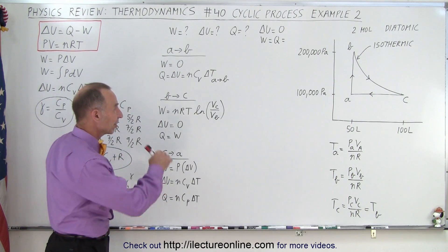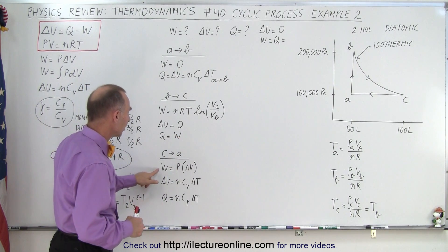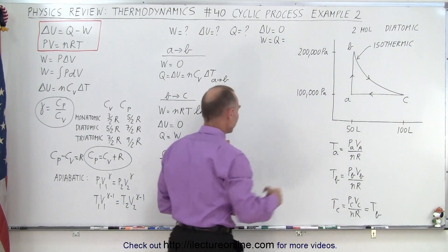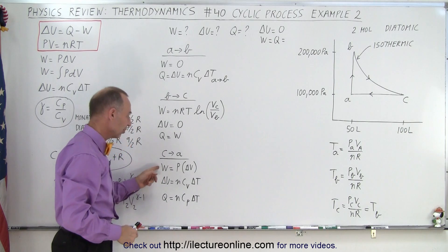Finally, going from C to A, that's an isobaric process. The work done will be the pressure times the change in the volume. Notice that it's a negative change in volume, so we get a negative result for the work done.